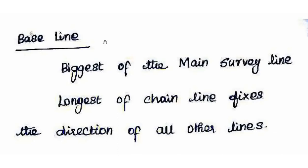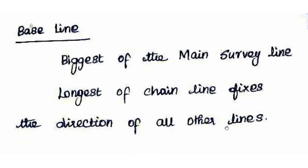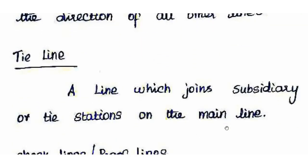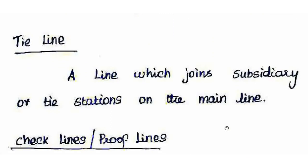The baseline is fixed as the longest chain surveying line. Tie line means tie stations or subsidiary stations are connected to the main line. Subsidiary or tie stations allow surveying of interior details of the main area.